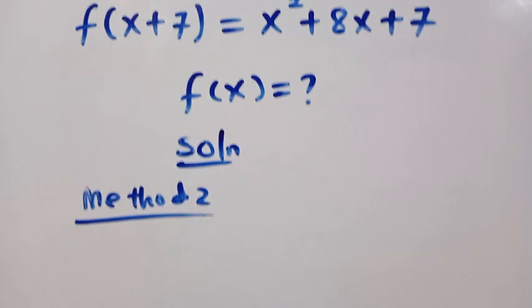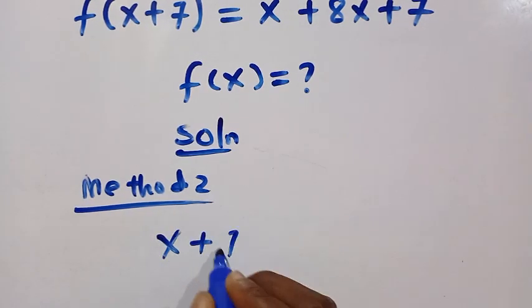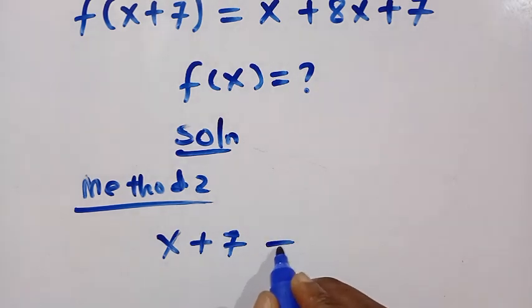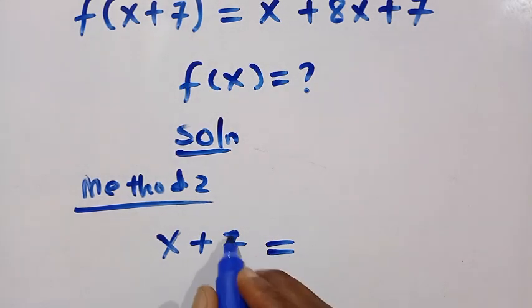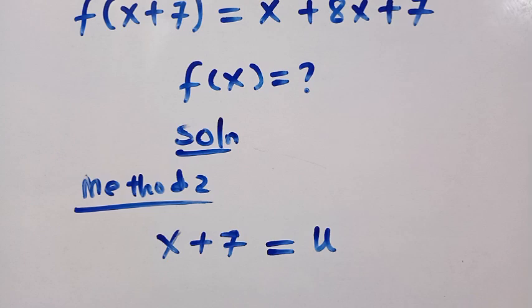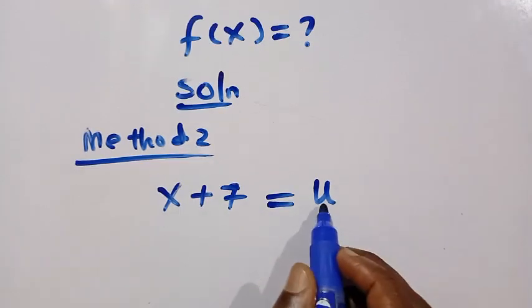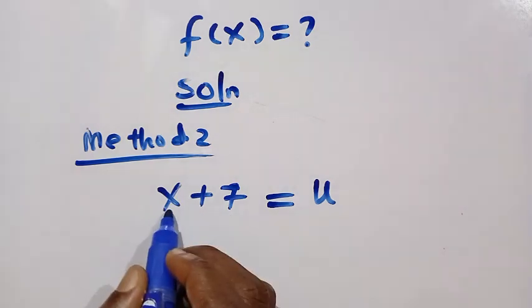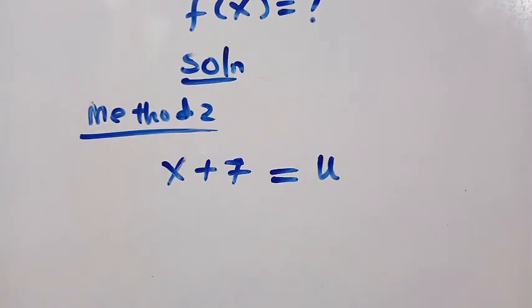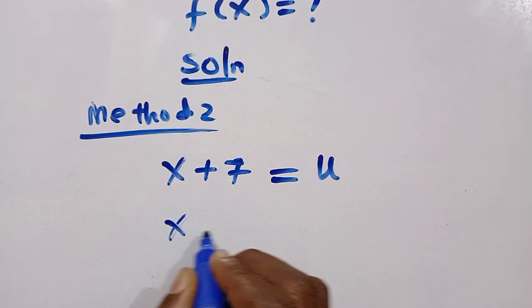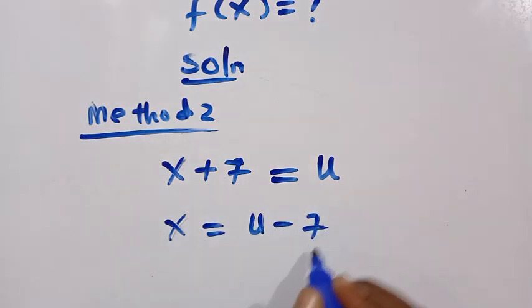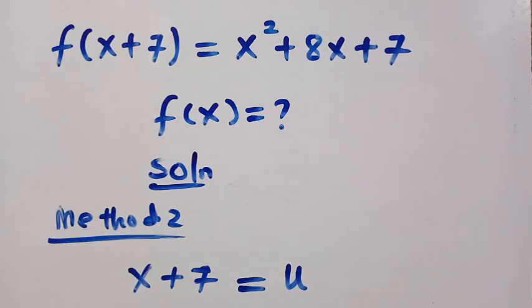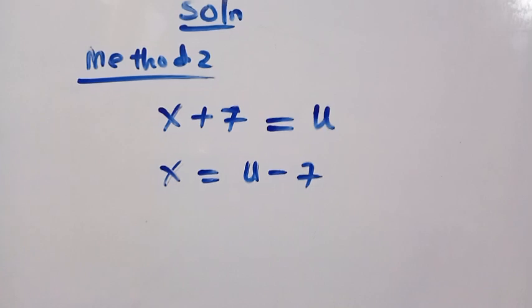We have x + 7. Suppose I let x + 7 here—if I let this one to be equals another letter, if I choose letter u, then u here is also a member of the real numbers, and x here is also a member of the real numbers. So let's make x the subject of the formula here. So by making x the subject of the formula, we are going to have x = u - 7, just like we transfer 7 to the other side. Then from the right-hand side, we have x² + 8x + 7.